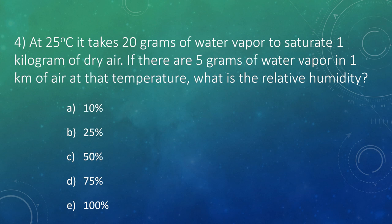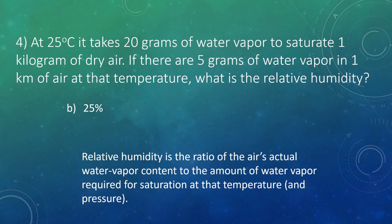Question four: at 25 degrees Celsius it takes 20 grams of water vapor to saturate a kilogram of dry air. If there are 5 grams of water vapor in that same situation, what is the relative humidity? We have 5 grams, and 20 is what we need for saturation — 5 is one-fourth of 20, so the answer is 25% relative humidity. You take the ratio of the actual water vapor compared to what's needed for saturation.